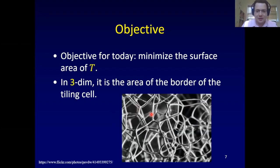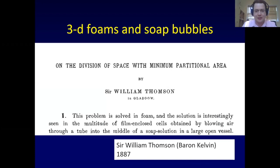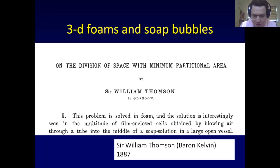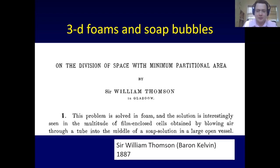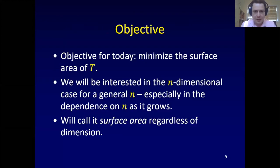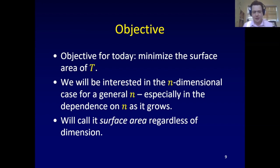In three dimensions, it's the area of the borders between the individual cells. This picture of a soap film in three dimensions has the property that surface tension naturally minimizes surface area between cells. These questions, at least in two and three dimensions, are quite old — this is a paper by Baron Kelvin from 1887 about minimum surface area of cells, motivated specifically by soap bubbles.